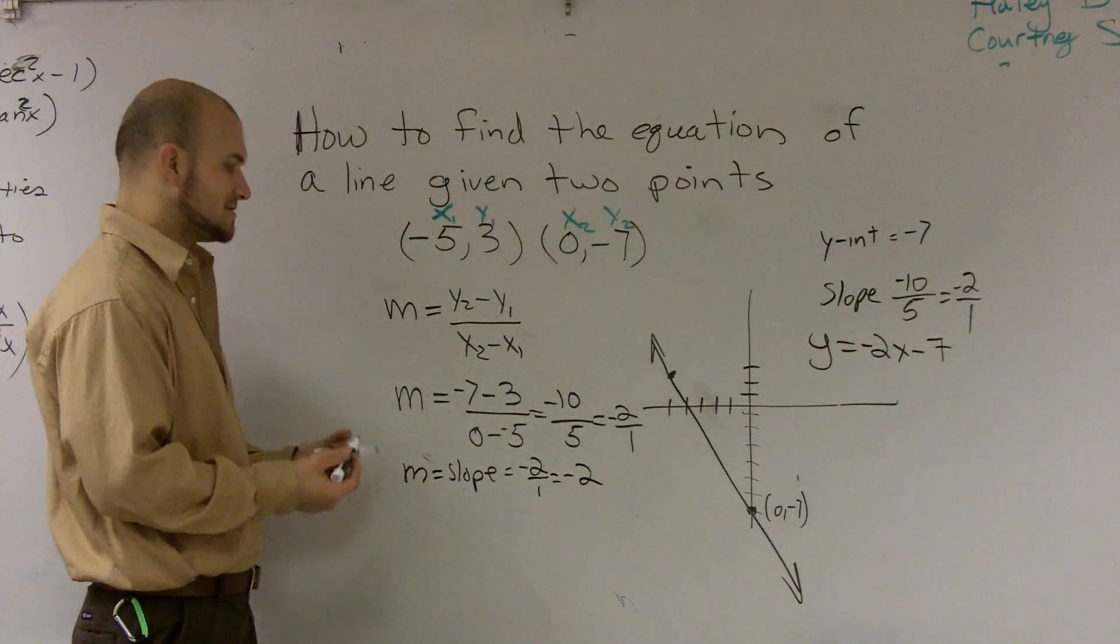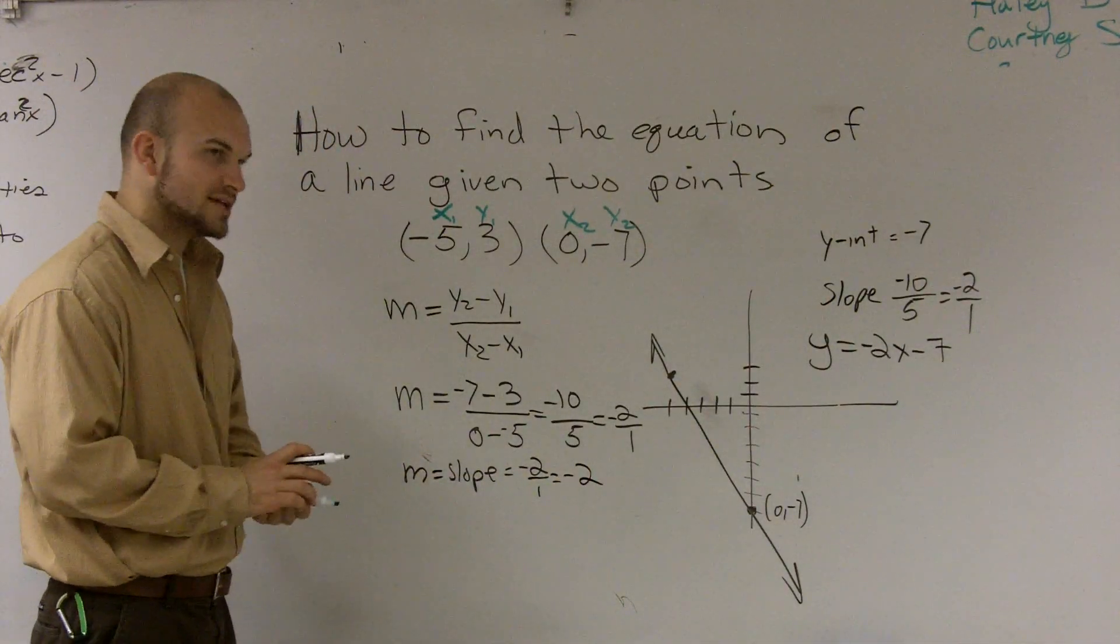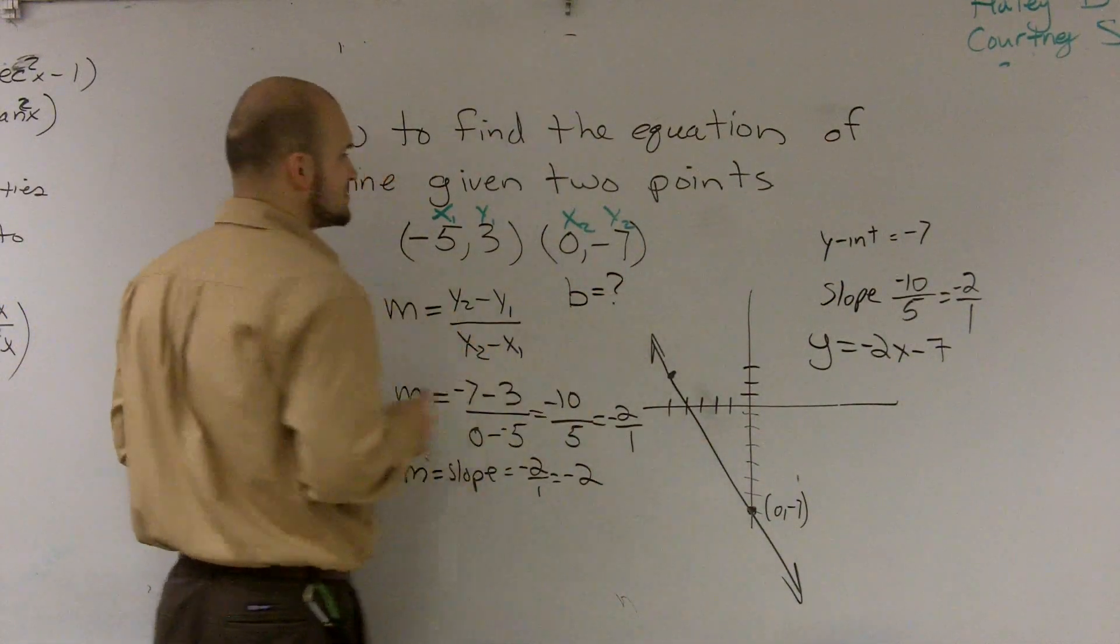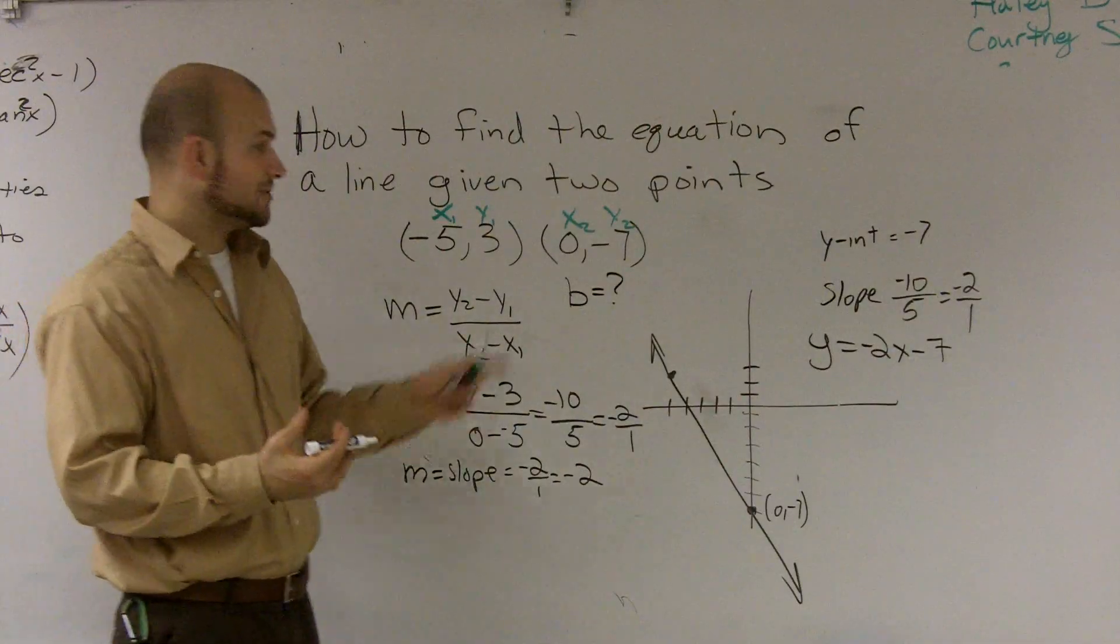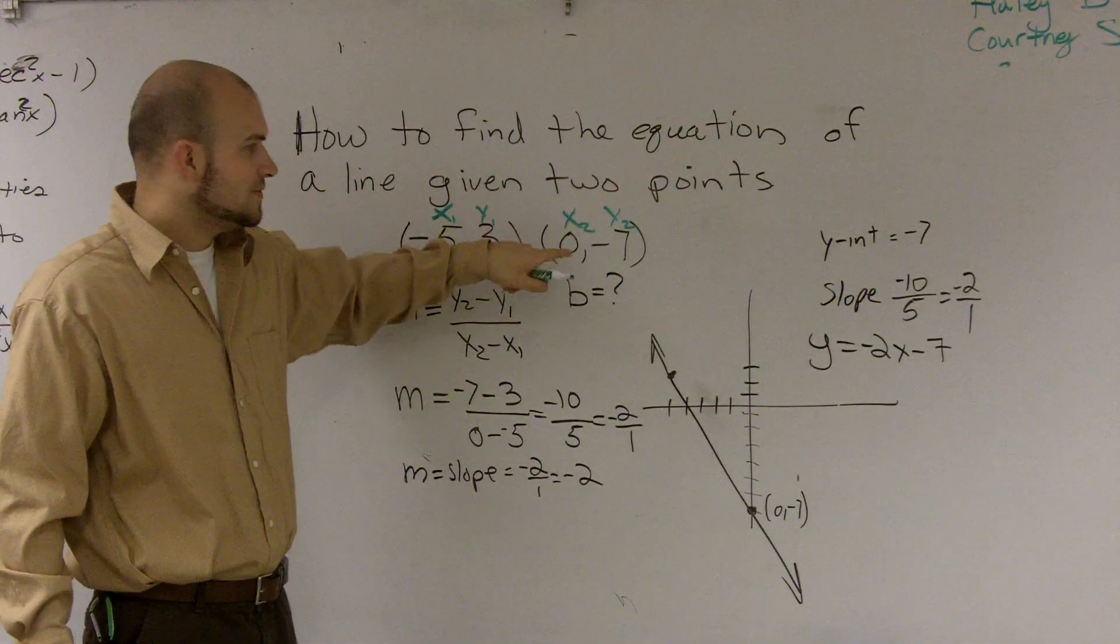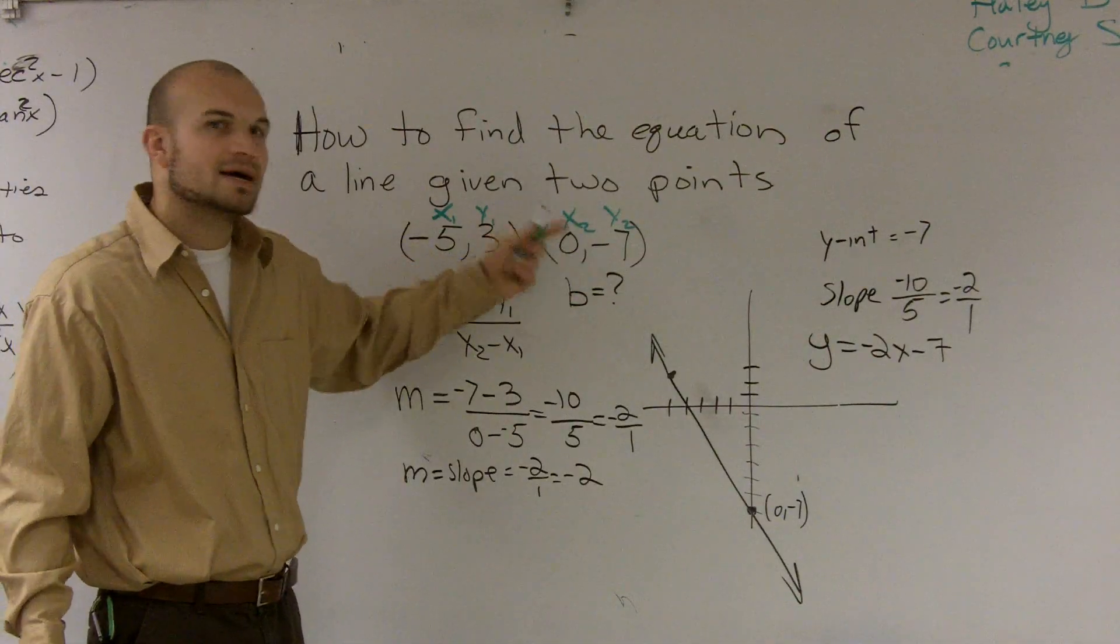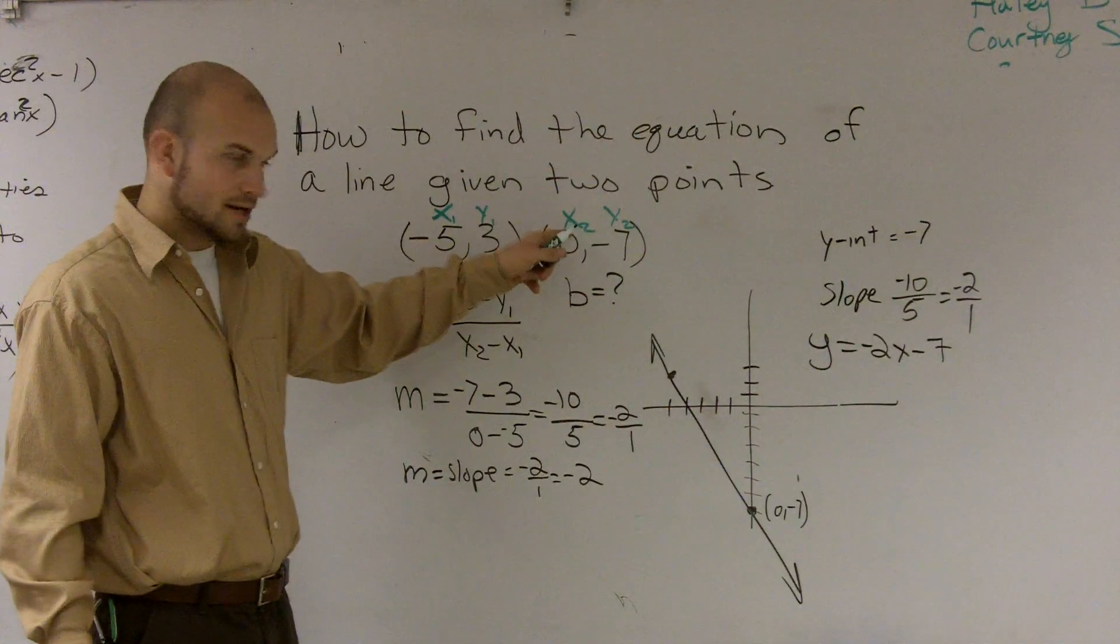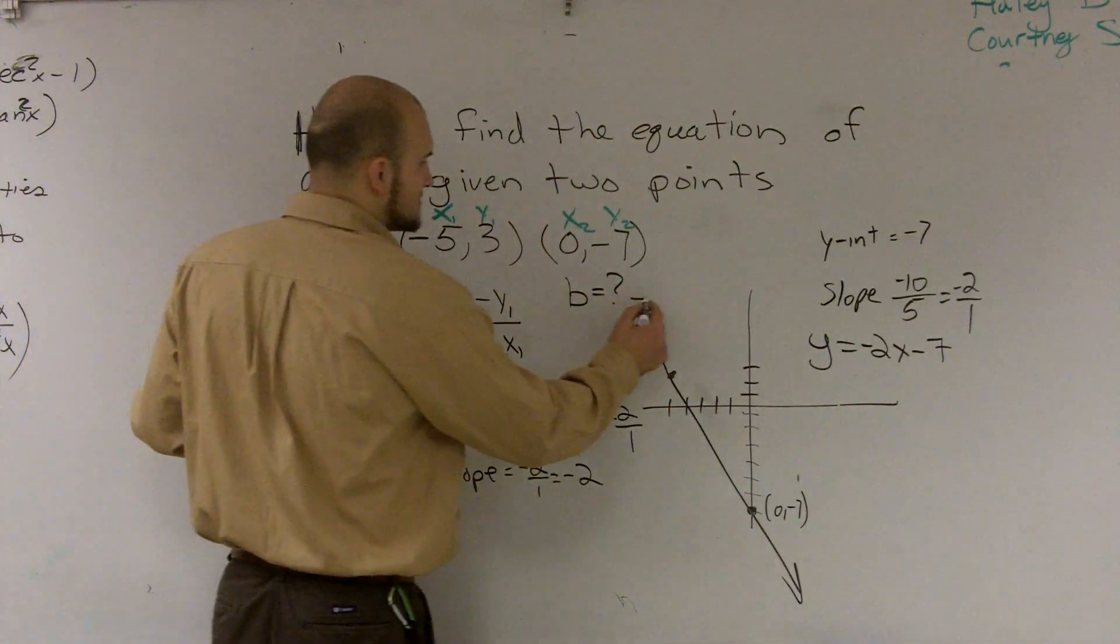Now, a lot of times what we have to do is we have to find out what our y-intercept is. And our y-intercept, remember, is b. So fortunately on this problem, I've given you guys the y-intercept, because you know this is automatically the y-intercept, because the y-intercept is always what your y value is when x equals 0. So our y-intercept is equal to negative 7.